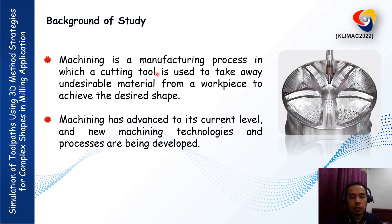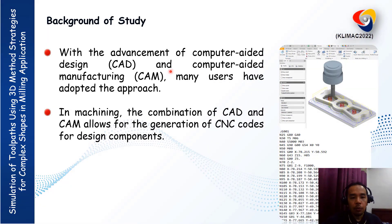As for your information, machining is a manufacturing process in which a cutting tool is used to take away undesirable material from a piece to achieve the desired shape, as we can see in these slides. Machining has advanced to its current level and new machining technologies and processes are being developed. With the advancement of computer-aided design (CAD) and computer-aided manufacturing (CAM), many users have adopted this approach. The combination of CAD and CAM allows for the generation of CNC code for design components.